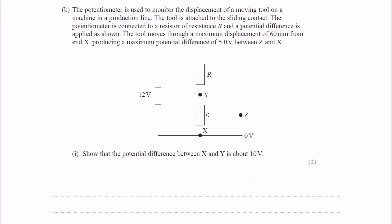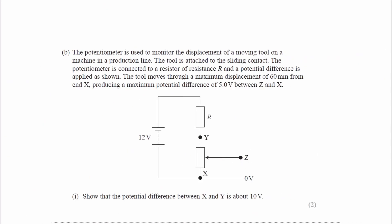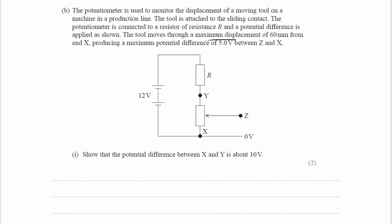For part B, we have a moving tool. The moving tool is attached to this sliding contact Z, the same as what we have here. We're told that the tool moves through a maximum displacement of 60 millimeters from end X, so the highest it can go is 60 millimeters. That produces a maximum potential difference of 5 volts between Z and X. We would have 5 volts here when terminal Z is 60 millimeters up from X.